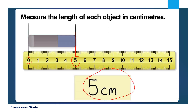So the measurement is five cm. Always remember: when you want to measure, put the object at sharp zero. Please be careful with that — put it at zero first.